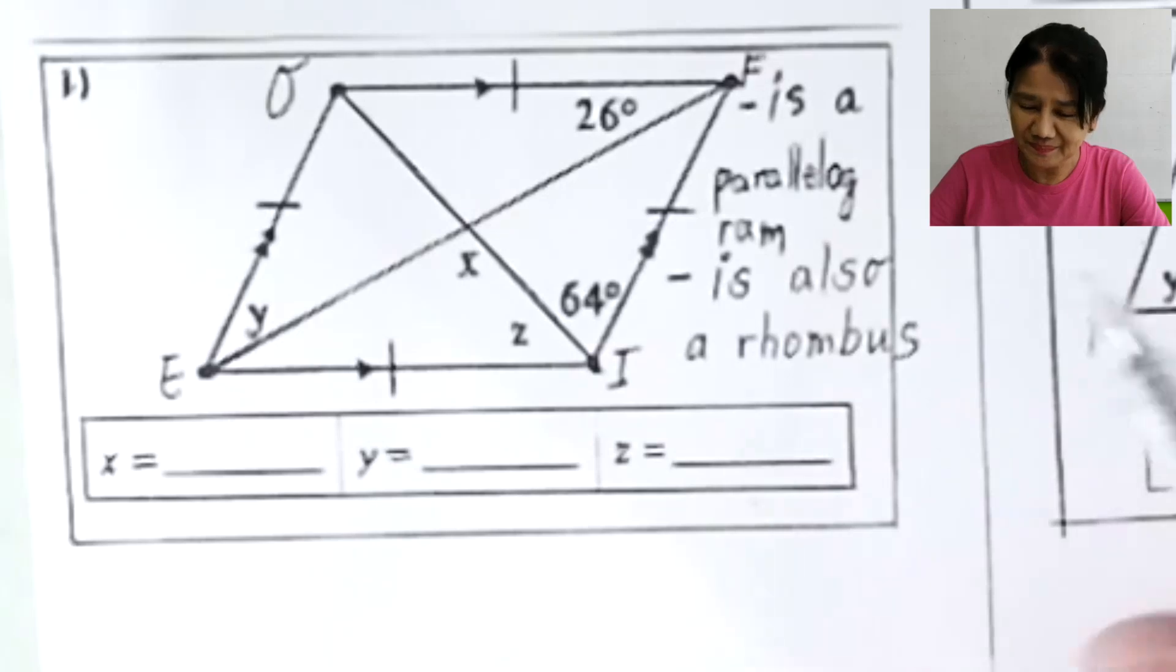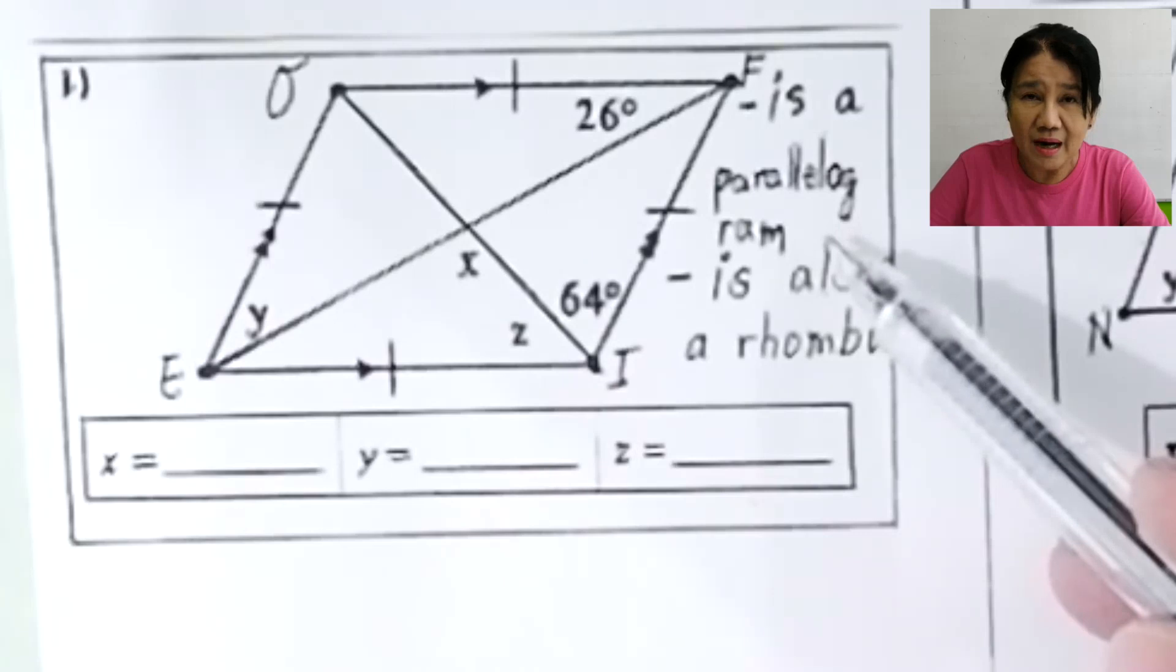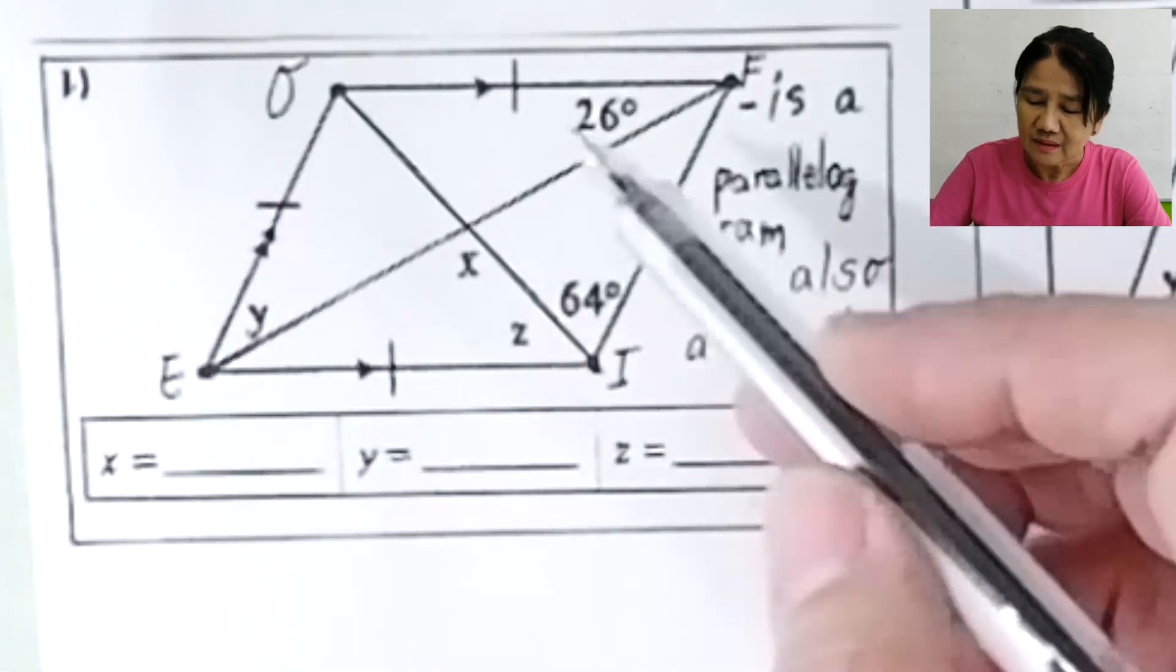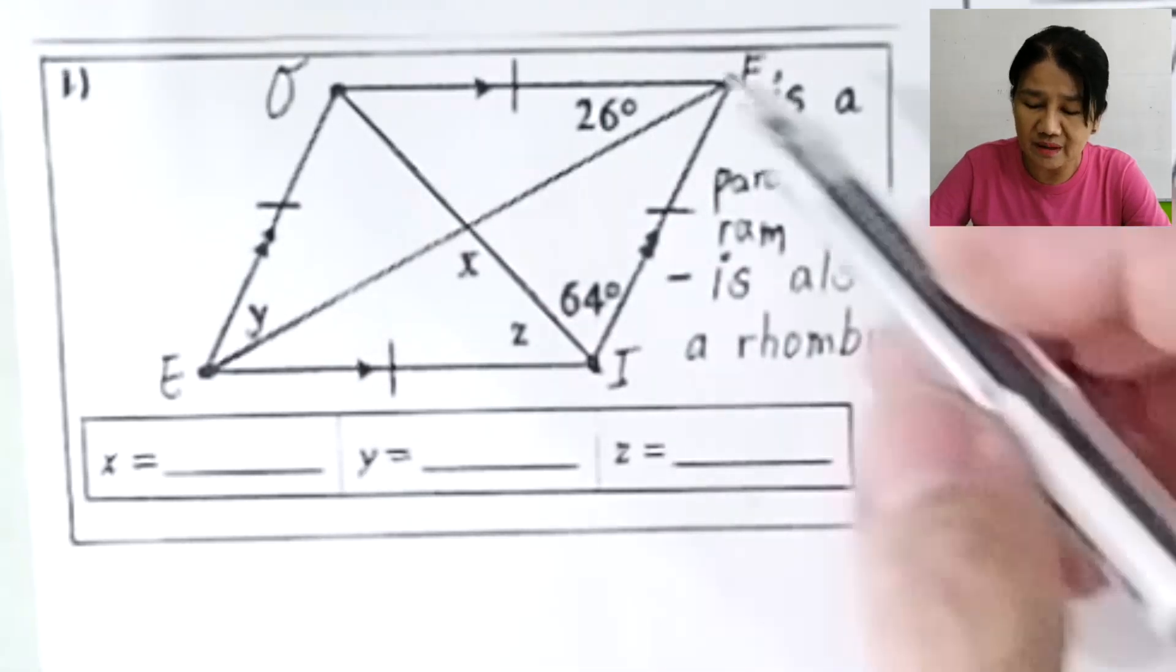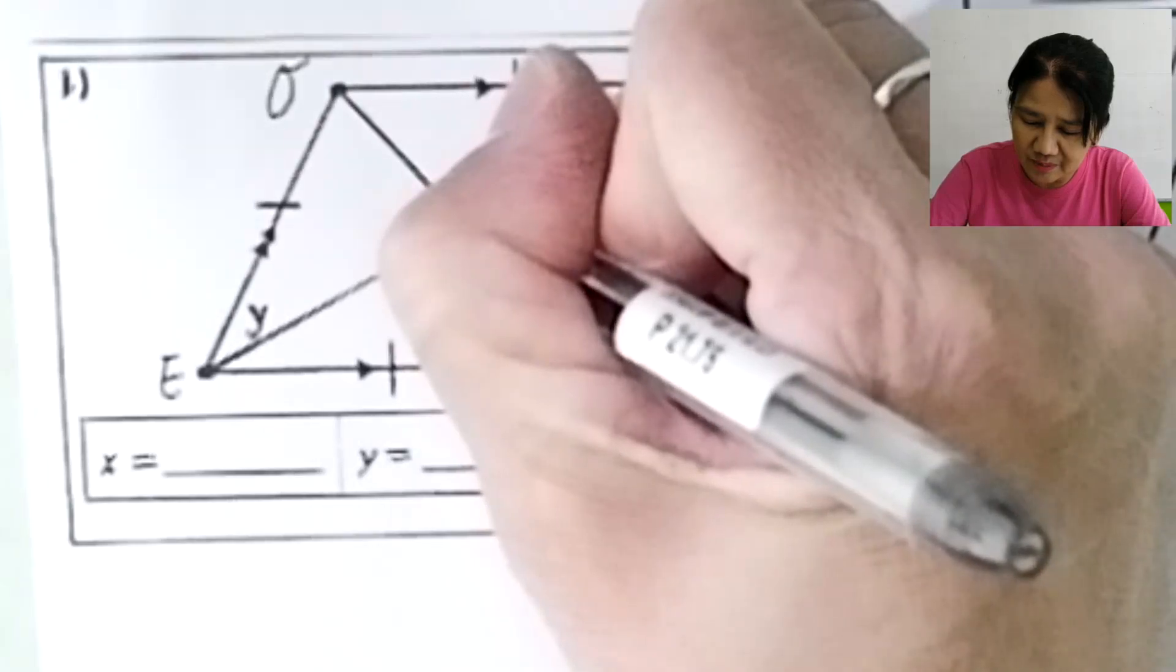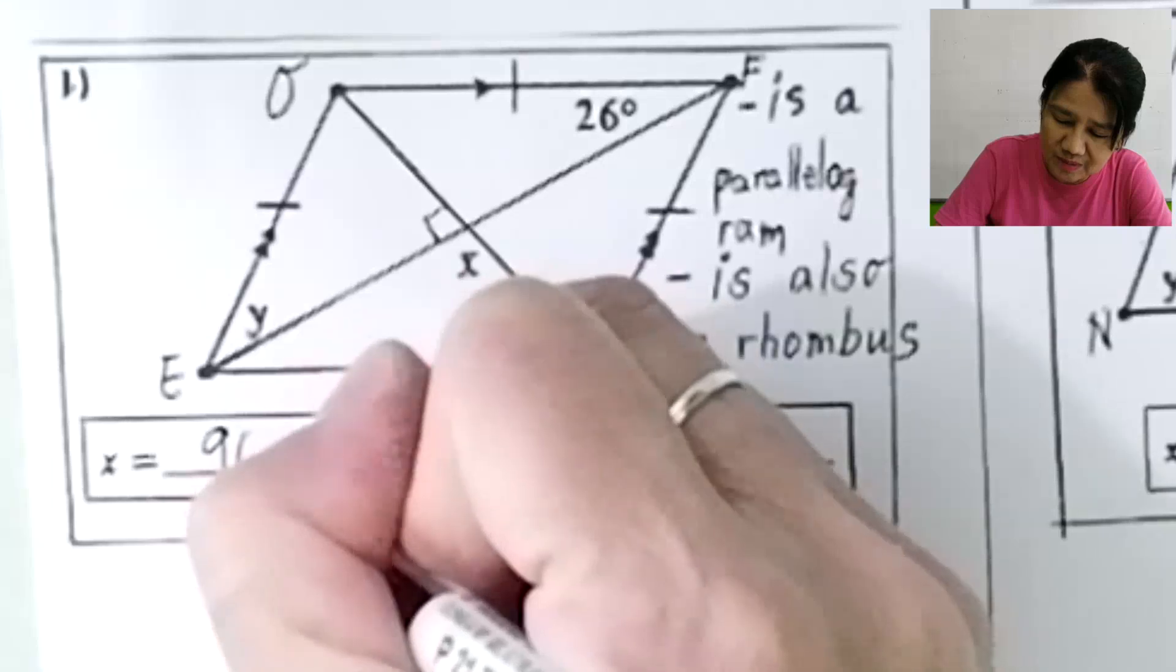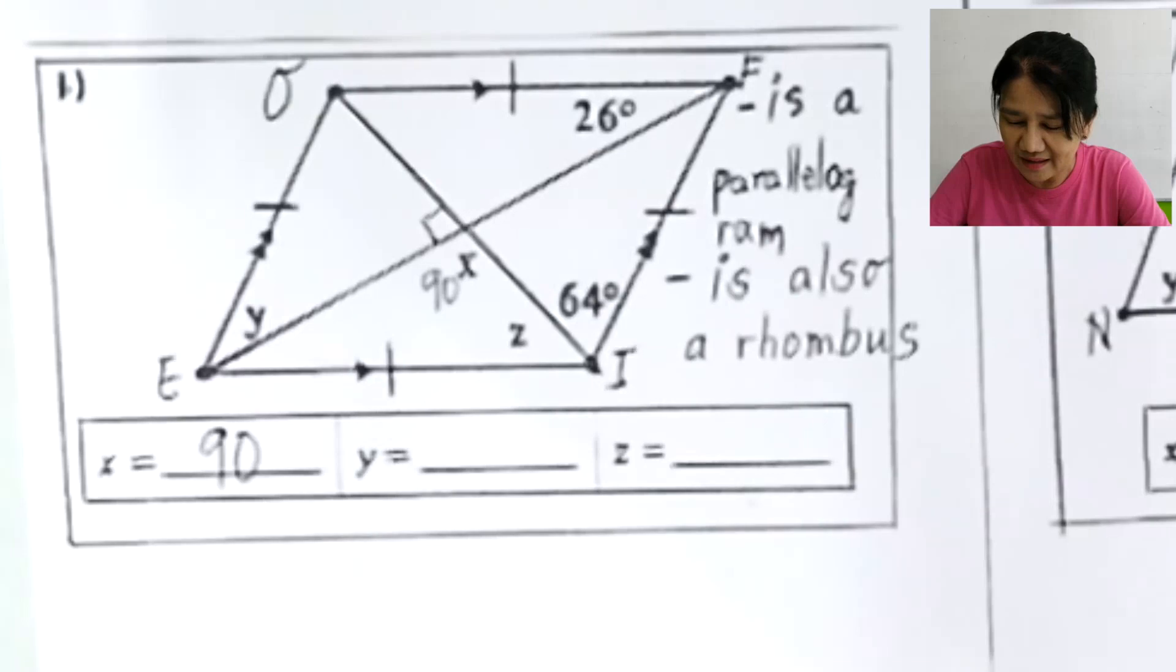Problem number one. OFIE is a parallelogram and is also a rhombus. We will have to solve for X, Y, and Z. So, given a rhombus, you always have to remember that the diagonals bisect each other and are perpendicular. So, the measurement of the angle here is 90. Therefore, X should also be 90. So we get one already. X is 90.